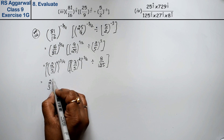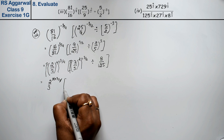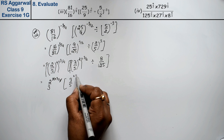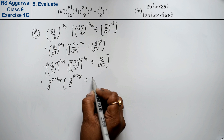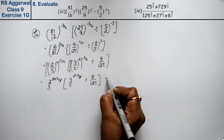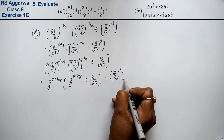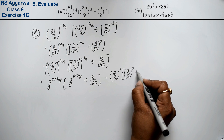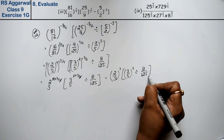Now we see: 2 upon 3 to the power 4 into 3 upon 4 — the 4s cancel. Similarly 3 upon 5 to the power 2 into 3 upon 2 — the 2s cancel. Divided by 8 upon 125. So we get: 2 upon 3 to the power 3, plus 3 upon 5 to the power 3, divided by 8 upon 125.